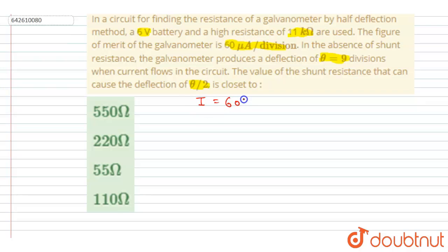60 micro ampere times 9. Now it is given that the battery connected is 6 volt, and the shunt resistance is 11 kilo ohm. So I will write 6 divided by (11000 plus resistance of the galvanometer).